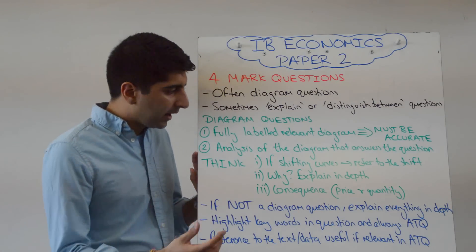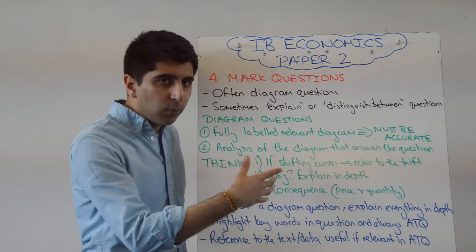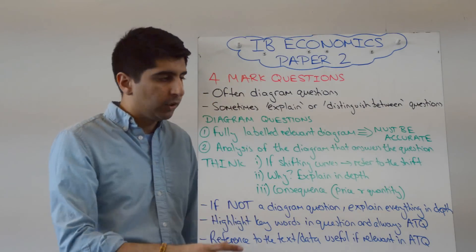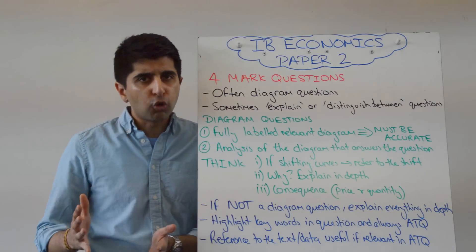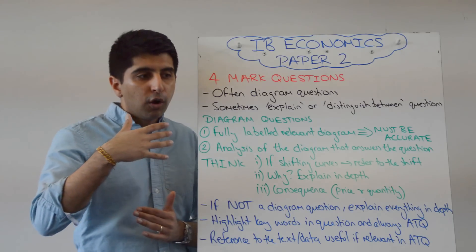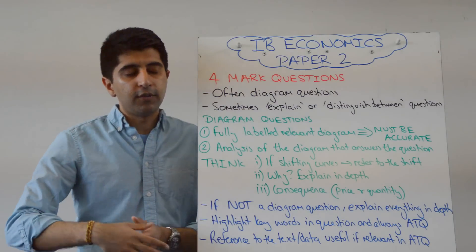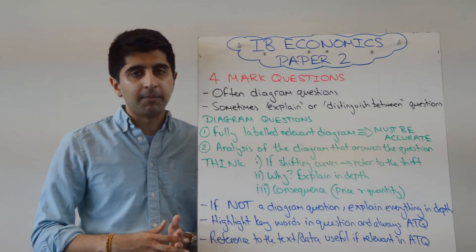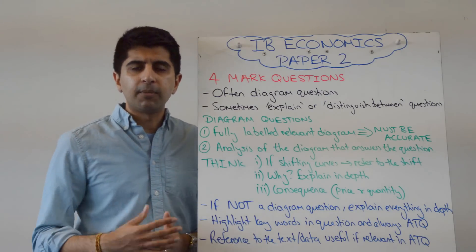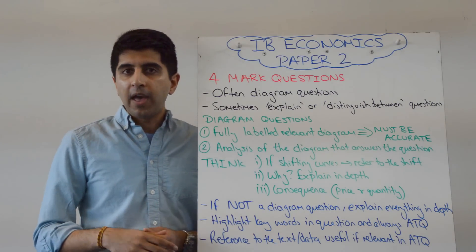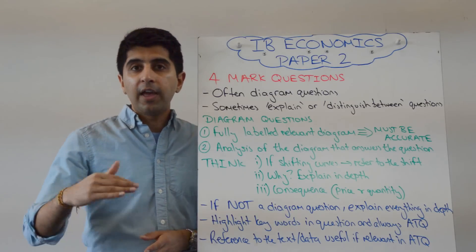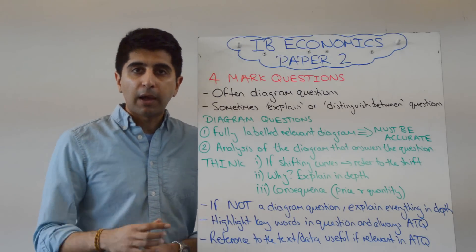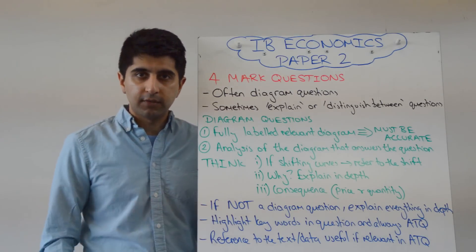In your writing, you need to analyse your diagram in a way that still answers the question. There are three things to think about when writing your analysis to accompany your diagram. First, if you've shifted curves, you've got to explain the shift — refer to it. So if it's a supply curve and you've shifted it to the right, say the supply curve has shifted to the right from S1 to S2. If it's an AD/AS, AD has shifted to the right from AD1 to AD2. If it's a tariff diagram and the tariff has been removed, say the world supply curve has shifted downwards from S-world-plus-tariff to S-world. Start by referring to your shifts and the old and new curves.